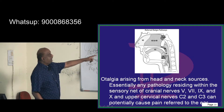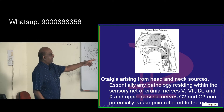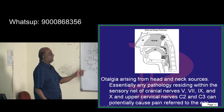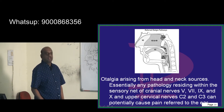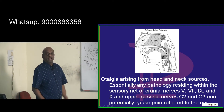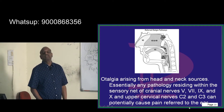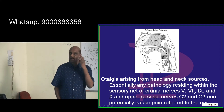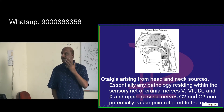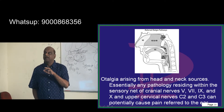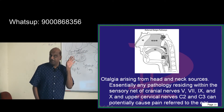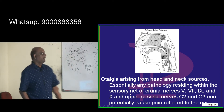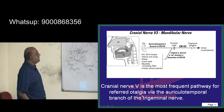Cranial nerve 5, cranial nerve 7 — the facial nerve, because the chorda tympani is supplying — the glossopharyngeal nerve, which is CN 9, and the vagus, CN 10, and the upper two cervical nerves C2 and C3 — they are all involved in leading to referred otalgia. Some other structure in the head and neck that they supply gets inflamed, and since they are also supplying the ear, there is referred otalgia. Let us quickly look at each of these cranial nerves.